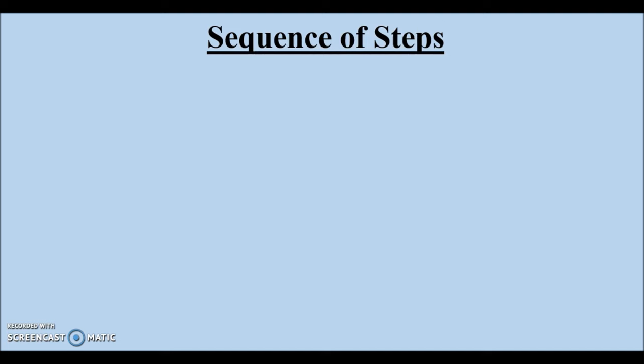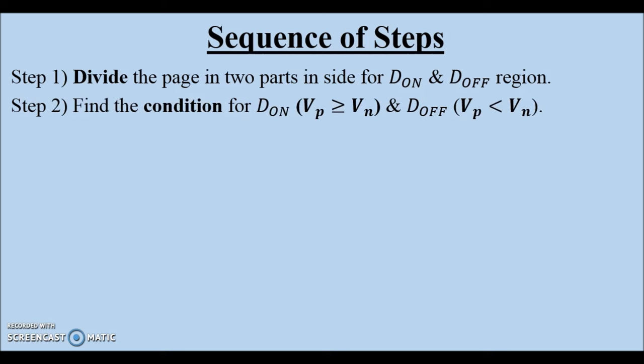Let us recap the sequence of steps introduced in the previous video lecture. First, divide the page in two sides and label them as dOn and dOff sides. Second, find the range of the magnitude of the input signal waveform for which diode is on and for which diode is off. Also, note down the decision-making voltage.